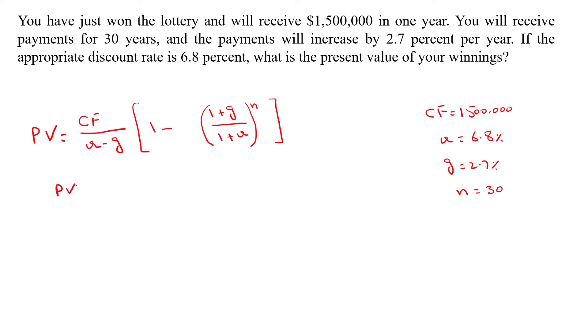So, present value is equal to 1.5 million divided by 0.068 minus 0.027, into 1 minus 1.027 divided by 1.068 raised to power 30.